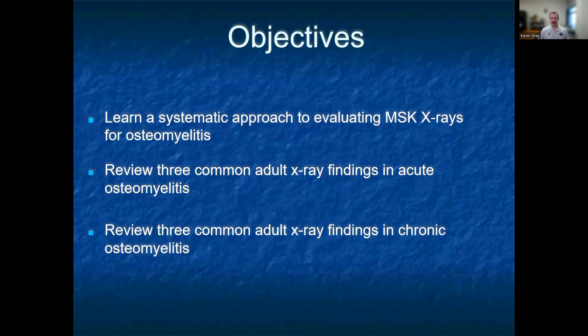Our objectives will be to learn a systematic approach for evaluating musculoskeletal x-rays for findings consistent with osteomyelitis, review three common adult findings in acute osteomyelitis, as well as three common adult findings in chronic osteomyelitis.